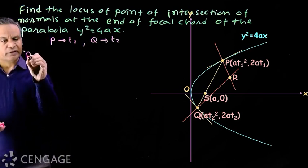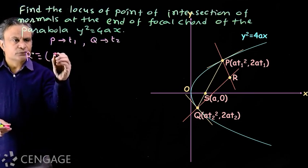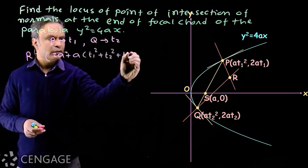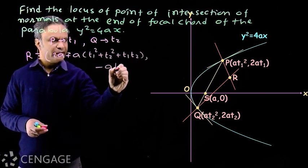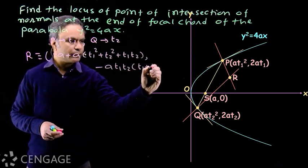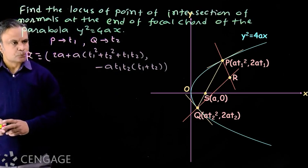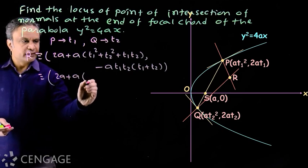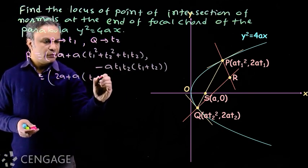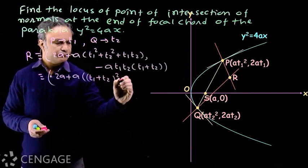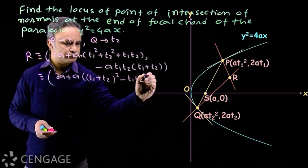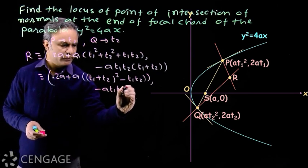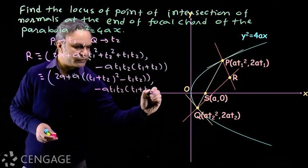The coordinates of point R are: x = 2a + a(t₁² + t₂² + t₁t₂), y = -at₁t₂(t₁ + t₂). We can write the x-coordinate as 2a + a[(t₁ + t₂)² + t₁t₂], and the y-coordinate is -at₁t₂(t₁ + t₂).